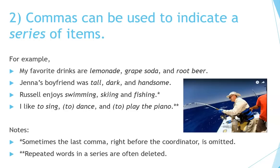Commas can be used to indicate a series of items: A, B, and C. For example: 'My favorite drinks are lemonade, grape soda, and root beer.' 'Jenna's boyfriend was tall, dark, and handsome.' 'Russell enjoys swimming, skiing, and fishing.' 'I like to sing, to dance, and to play the piano' — or 'I like to sing, dance, and play the piano.' Sometimes the last comma before the coordinator is omitted. Repeated words in a series are often deleted.